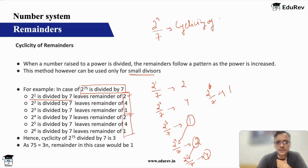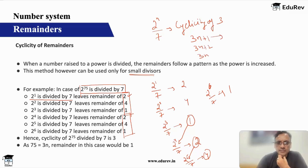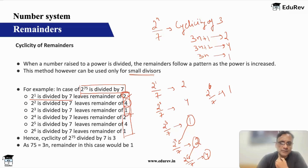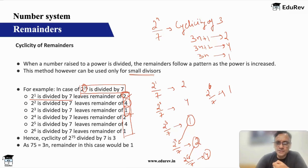Two to the power n divided by seven has a cyclicity of three. That means I can check whether the power is of the type 3n+1, 3n+2, or 3n. If it is of the type 3n+1, my remainder will be two. If 3n+2, my remainder will be four. And if it is of the type 3n, my remainder will be one. My power is 75. 75 is of the type 3n, so my answer is going to be one. As simple as that.